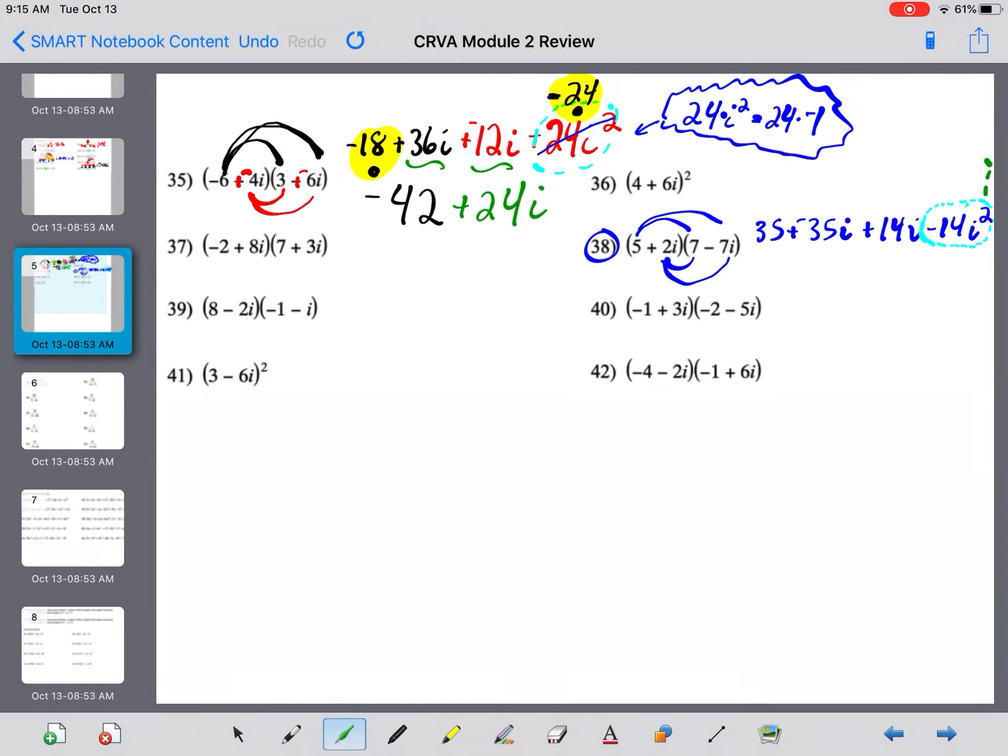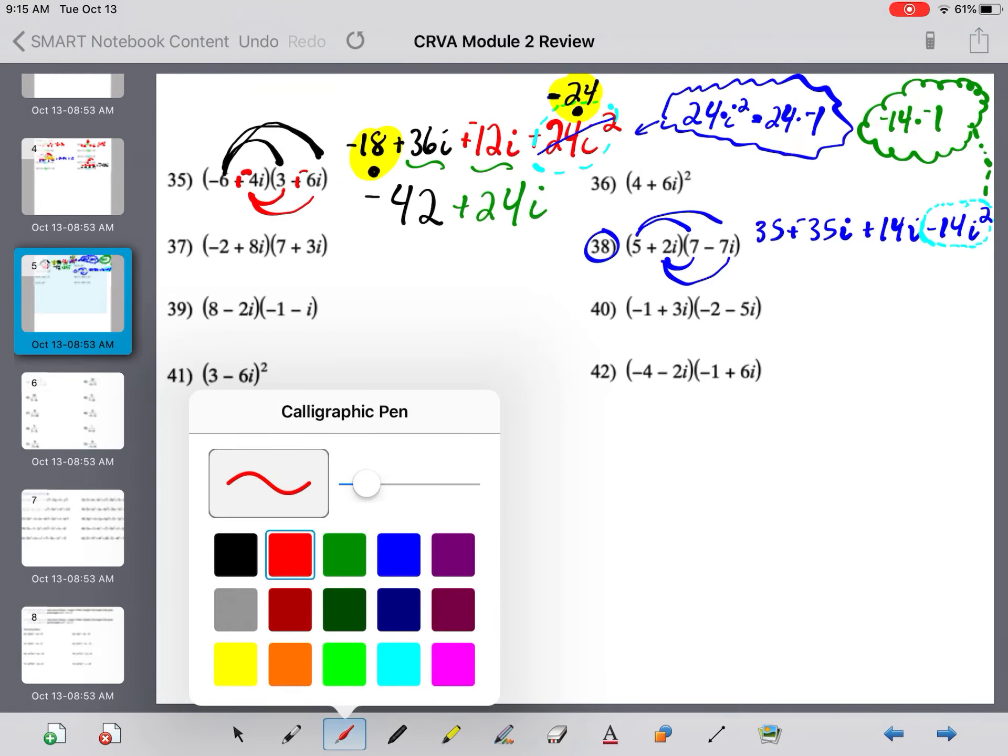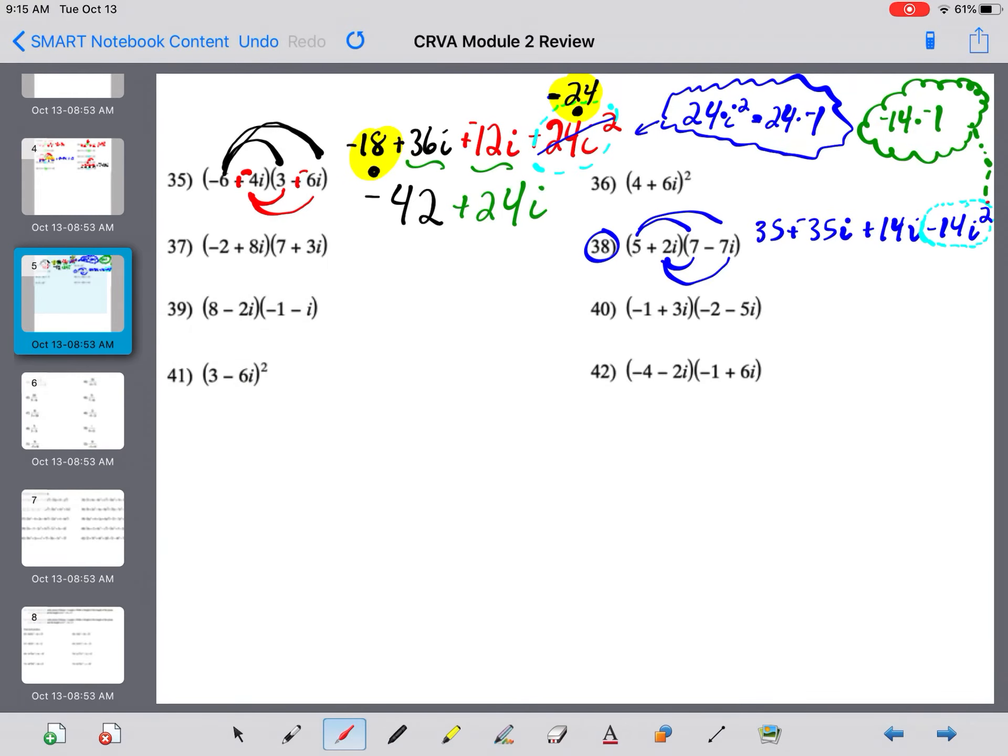I'm going to do a little thought bubble up here. I'm thinking that's a bad thought bubble. I shouldn't go into being a comic strip writer. Negative 14 times, let's not say i squared, let's say negative 1. Negative 14 times negative 1 is positive 14. So, this whole thing is really just a plain old, real positive 14.